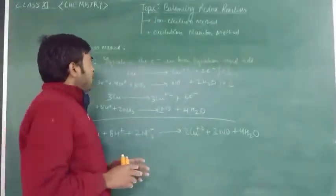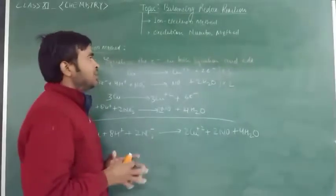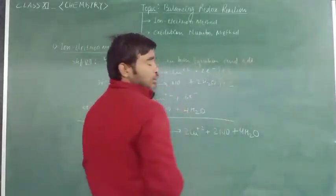In this step, we equalize the electrons in both half-reactions and after that, we add the two half-reactions.